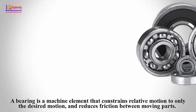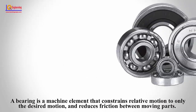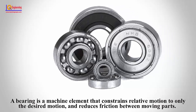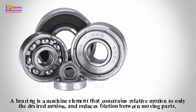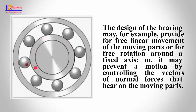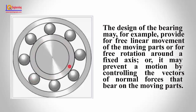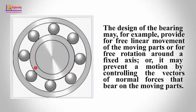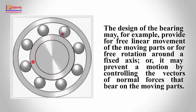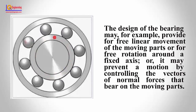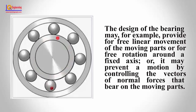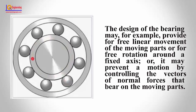A bearing is a machine element that constrains relative motion to only the desired motion and reduces friction between moving parts. The design of the bearing may, for example, provide for free linear movement of the moving parts or for free rotation around a fixed axis, or it may prevent a motion by controlling the vectors or normal forces that bear on the moving parts.